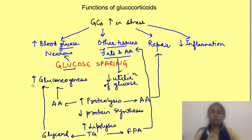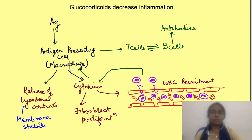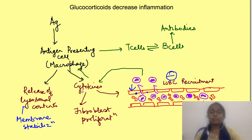Now let's come to the next function. For checking the immune system, glucocorticoids exert anti-inflammatory action. Basically they act on almost every step of inflammation. This diagram in brief shows some of the steps of the immune response. Glucocorticoids reduce inflammation by stabilizing the membrane of lysosomes. The contents of lysosomes are pro-inflammatory, so when lysosomes release their contents it causes increased inflammation. The stabilization of the membrane helps in restricting inflammation. Then they decrease the expression of adhesion molecules in endothelial cells, thus decreasing the recruitment of WBCs to the site of inflammation.